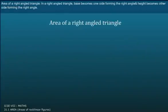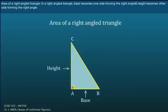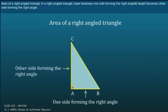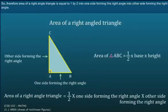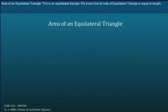Area of Right Angle Triangle. In a Right Angle Triangle, the Base becomes one side forming the right angle and the Height becomes the other side forming the right angle. Therefore, Area of a Right Angle Triangle is equal to 1/2 into one side forming the right angle into the other side forming the right angle.